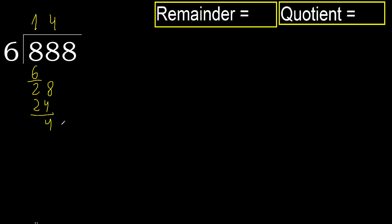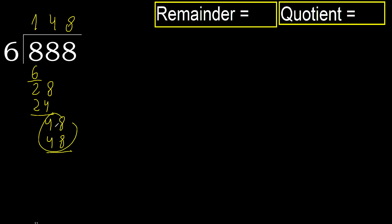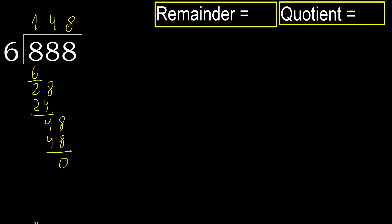Next: 48. 6 multiplied by 8 is 48, which is not greater. Subtract. Next, there is no number, therefore finish it.